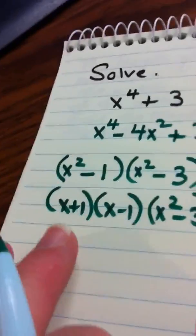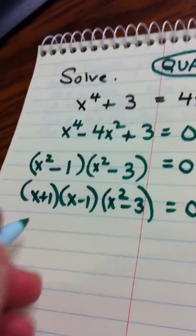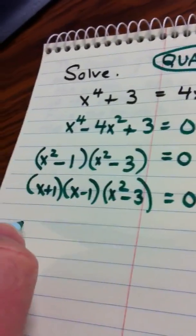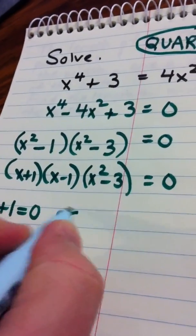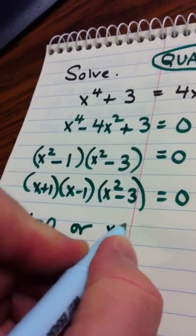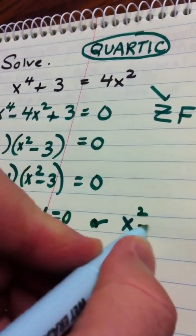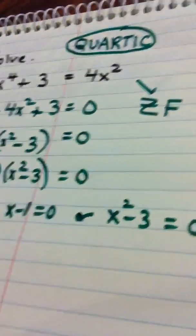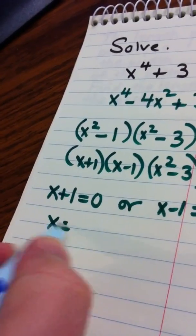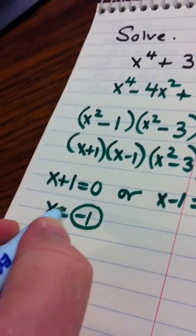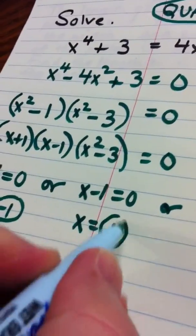So I've basically factored as much as I can, and this is set equal to zero. So I'm going to set up three cases. To solve this equation, either x plus one is zero, or x minus one is zero, or x squared minus three is zero. In the first case, x is a negative one. There's one solution. In the second case, x is a positive one.